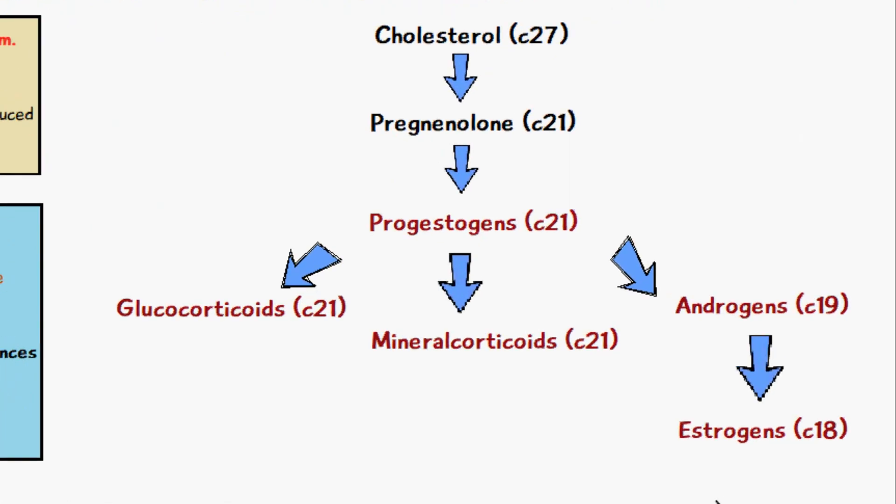Looking at this flow diagram, cholesterol is the precursor for all steroid hormones, with 27 carbon atoms. Following this we have the formation of pregnenolone, which has 21 carbon atoms, and then the formation of the first steroid hormone, progestogens, also with 21 carbon atoms. From progestogens we have the formation of glucocorticoids, mineral corticoids, and androgens. Androgens have 19 carbon atoms, and estrogens, formed from androgens, have 18 carbon atoms.